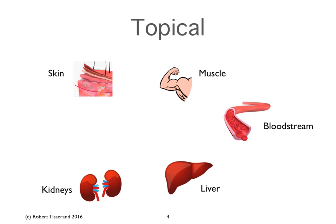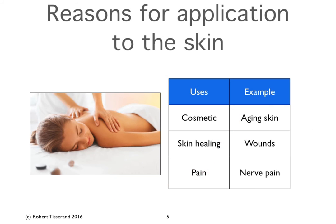From topical application, approximately 5% of essential oil is absorbed into the tissues beneath the skin and then into the bloodstream, taking the usual route out of the body. We should also remember that from topical application there is also going to be some inhalation that takes place. Reasons for applying essential oils to the skin include all kinds of cosmetic uses, skin healing, and many types of pain — whether it be menstrual pain, nerve pain, neuropathic pain, or joint and muscular pain. These are all very amenable to essential oils applied topically.